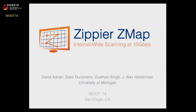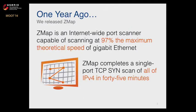Hello, I'm David Adrian, presenting on behalf of my co-authors Zakir, Golshan, and Alex. We'll be discussing Zipier ZMAP, internet-wide scanning at 10 gigabits. As a quick refresher, about one year ago Michigan released ZMAP. ZMAP is an internet-wide port scanner capable of scanning at 97% the maximum theoretical speed of gigabit ethernet, resulting in TCP SYN scans of all of IPv4 in under 45 minutes, enabling insights into global internet-wide security ecosystems.